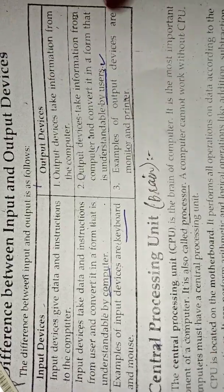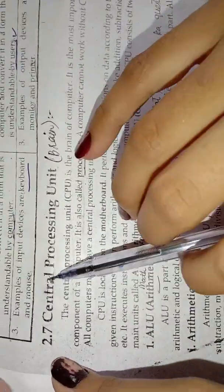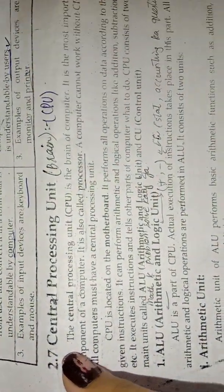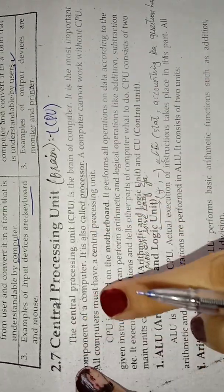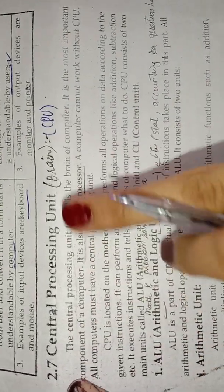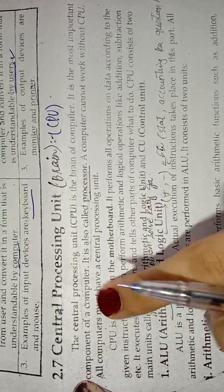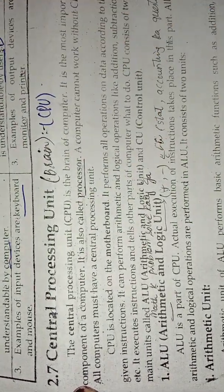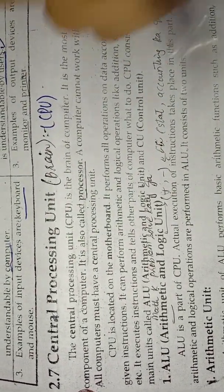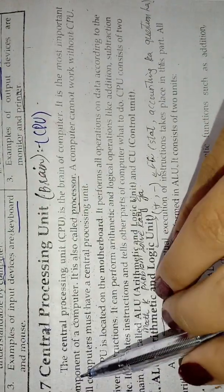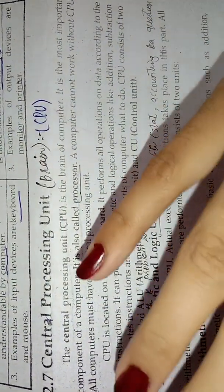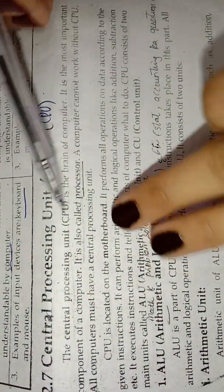The next topic is the central processing unit. What is a CPU? We call it the brain of the computer. The central processing unit is the most important component of the computer — just as without a brain the whole body cannot function, the computer cannot work without the CPU.